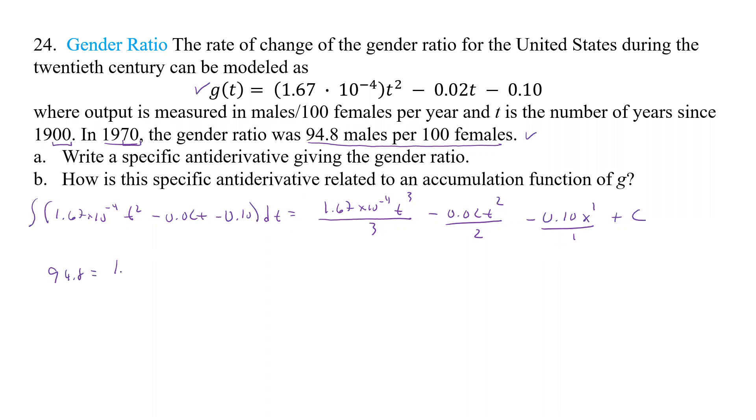And we'll have 1.67 times 10 to the negative 4 times 70 to the third divided by 3, and then minus 0.01 times 70 squared, and then minus 0.1 times 70 plus C.